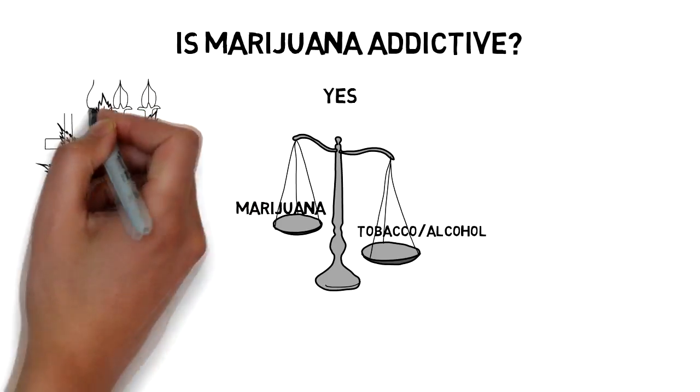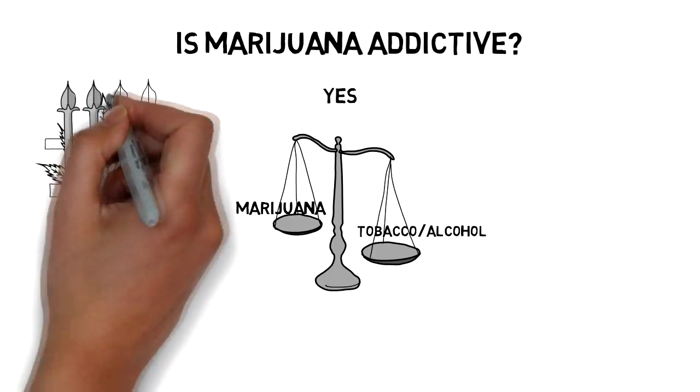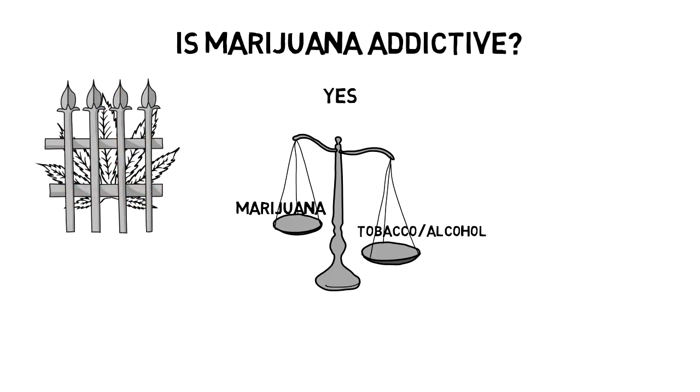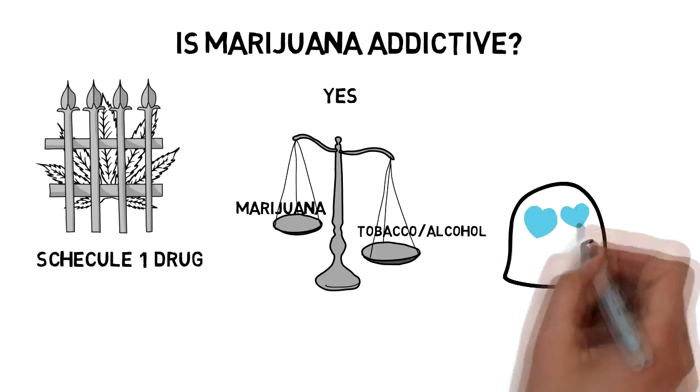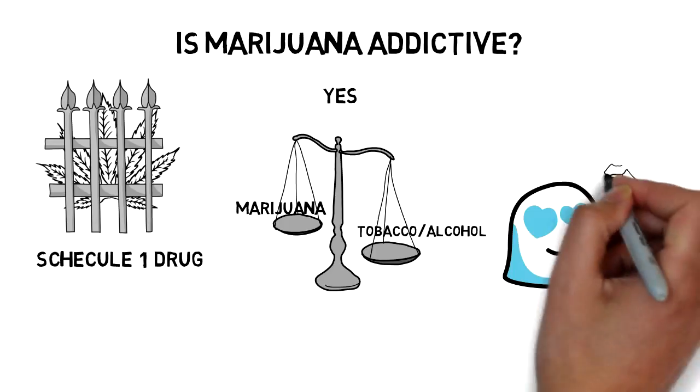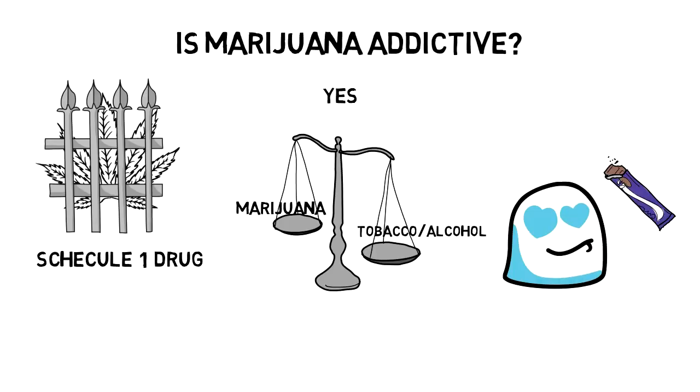But comparing marijuana to other schedule 1 drugs and not allowing it to be legal because there is a chance someone can get addicted to it is pretty far out there. There is a greater chance of you getting addicted to sugar than someone getting addicted to marijuana.